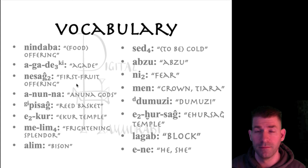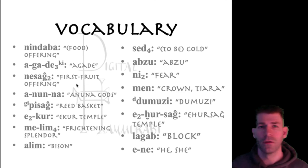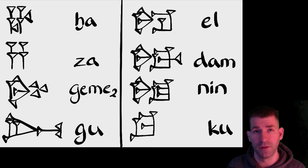Number eight: alim, bison. Number nine: sed₄, to be cold. Number ten: abzu, the Abzu. Number eleven: me-te, fear. Number twelve: men, a crown or tiara. Number thirteen: d-muati, the god Dumuzi. Number fourteen: e₂-ḫursag, the Eḫursag temple. Fifteen: lagab, a block. Sixteen: ene, he or she. The signs for this week: ḫe₂, ga, geme₂, gu, el, dam, nin, ku.